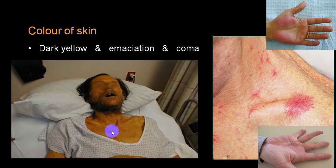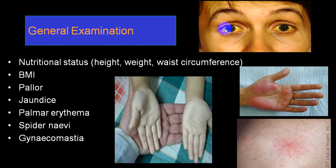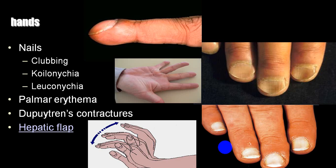This is most probably obstructive jaundice, and because there is severe emaciation it could be secondary to malignancy. You can see a clear-cut yellow color in the sclera. This is palmar erythema, spider nevi, and severe pallor — you can compare with your own palm. Some of these conditions may give you a clue towards the diagnosis. This is clubbing — a very common feature in malignancy. This is Dupuytren's contracture. This is koilonychia — very characteristic in iron deficiency anemia. This is leuconychia — white brittle nail in chronic liver disease.